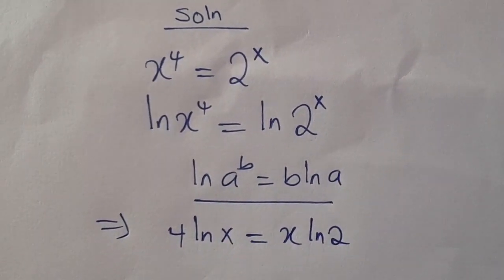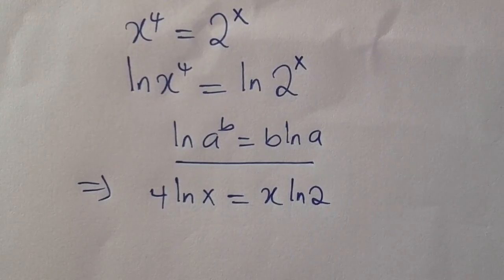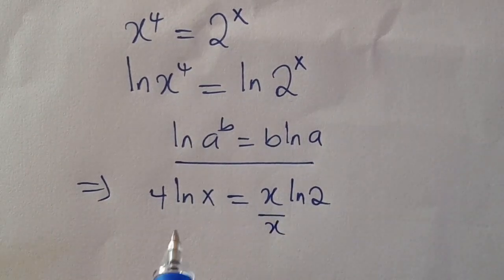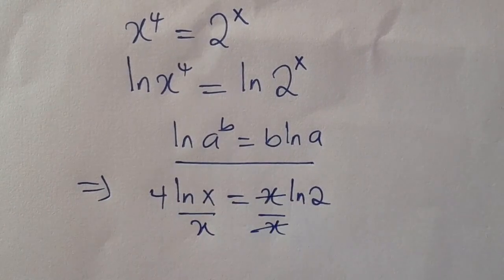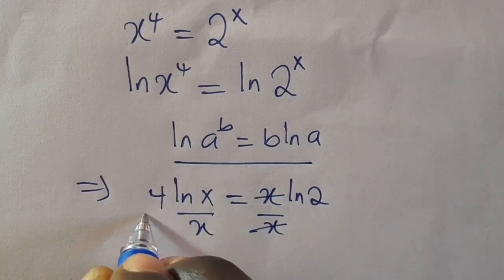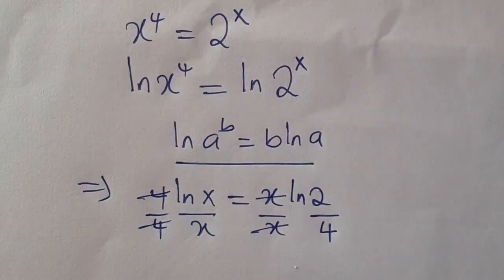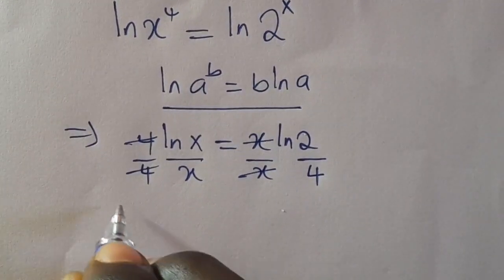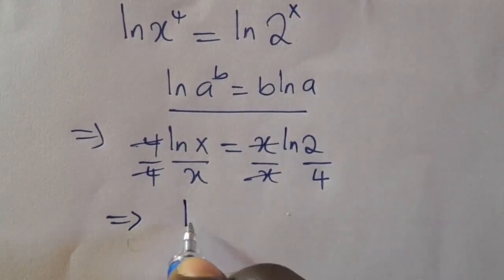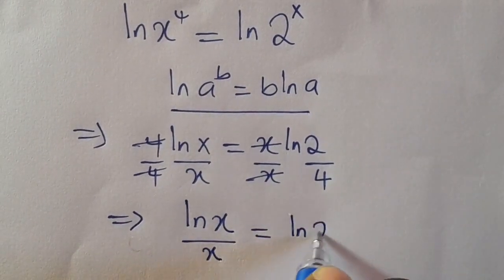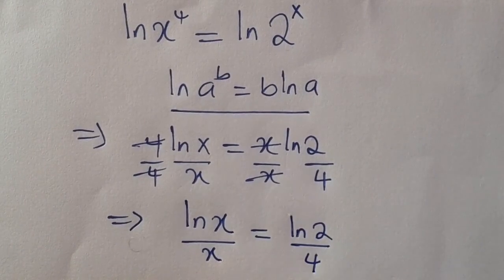So guys, the next thing is let us divide both sides by x. This will cancel x on the right. And when we also divide both sides by 4, this will cancel the 4 on the left. That simply means we are going to have ln(x) divided by x equals ln(2) divided by 4.